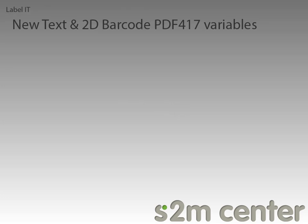The first new feature is the new set of variables added for text and barcode fields. The variables added are part.nominalLength, part.nominalWidth, part.cutLength, and part.cutWidth. You can use any of these variables in either a text field or a 2D barcode PDF417 field to get the information that you need.